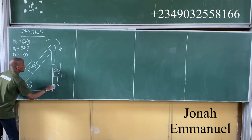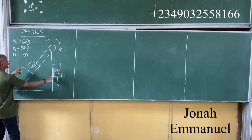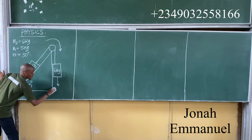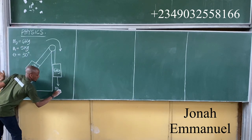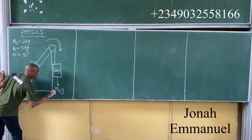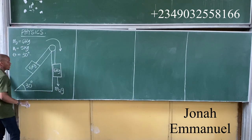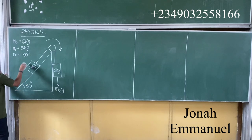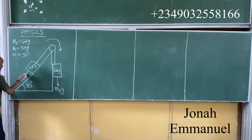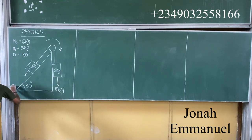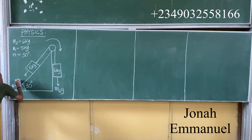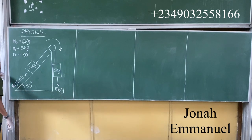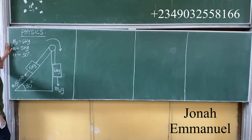So this becomes: this one here is M2, so it becomes M2g. This one is M1 — it's sliding down here, so it becomes M1g sin theta.